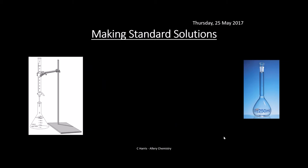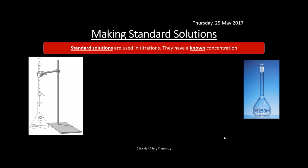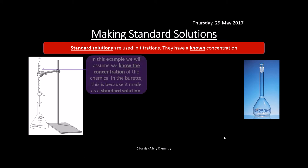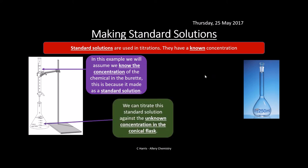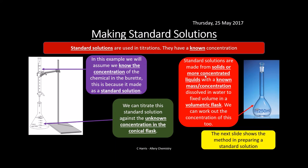Standard solutions are used in titrations and have a known concentration. In a titration, the standard solution in the burette is titrated against an unknown concentration in the conical flask. Standard solutions are made from solids (or concentrated liquids of known concentration), dissolved in water to a fixed volume — typically 250 cm³ in a volumetric flask.